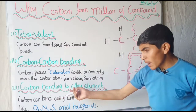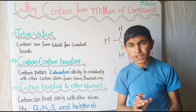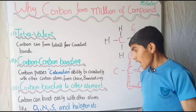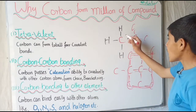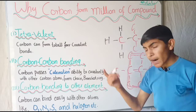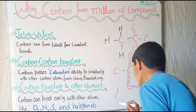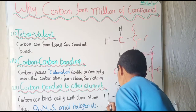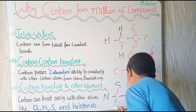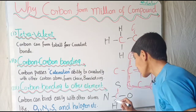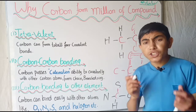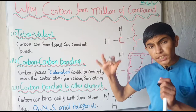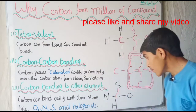The third property is carbon bonding to other elements. This is also a very good ability of carbon — to make bonds with elements other than itself. Carbon is allowed to make bonds with hydrogen, sulfur, nitrogen, oxygen, and halide elements. Therefore, carbon is a unique element that can also bond with other elements.